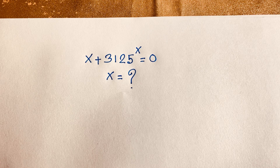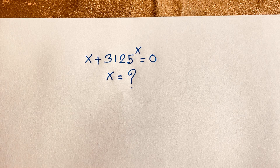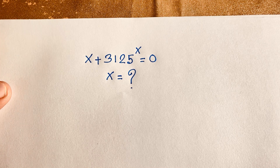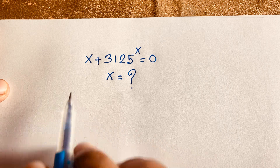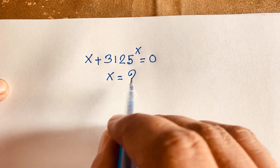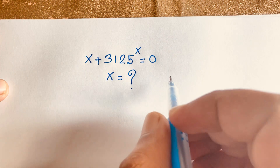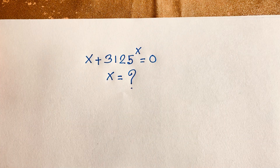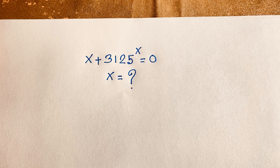Hello everyone. In this video, we have solved this interesting exponential equation: x plus 3125 to the power x is equal to 0. How to solve this interesting exponential maths question?